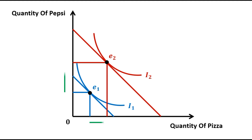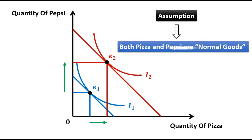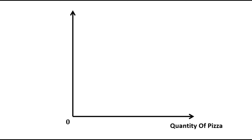You can notice that with an increase in income, the consumption of both goods has been increased. Thus, the indifference curves in this figure are drawn on the assumption that both pizza and Pepsi are normal goods.